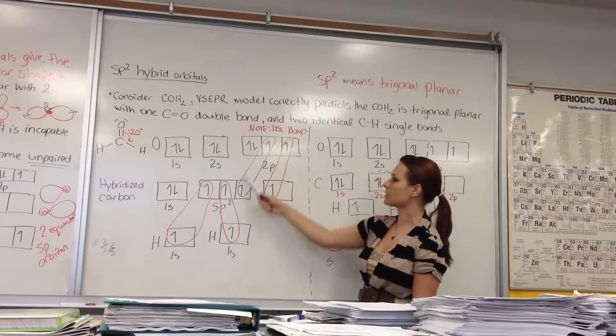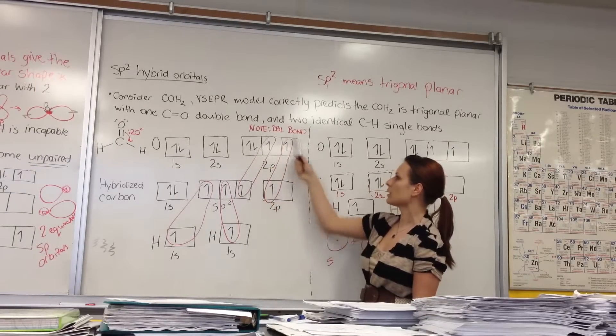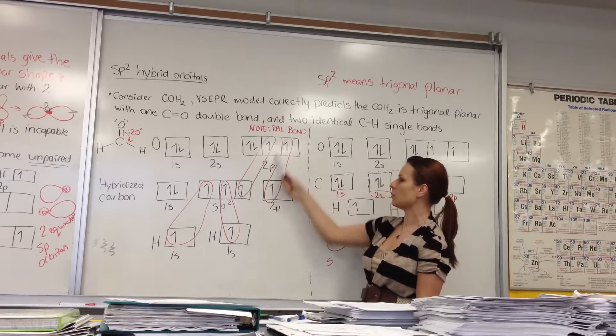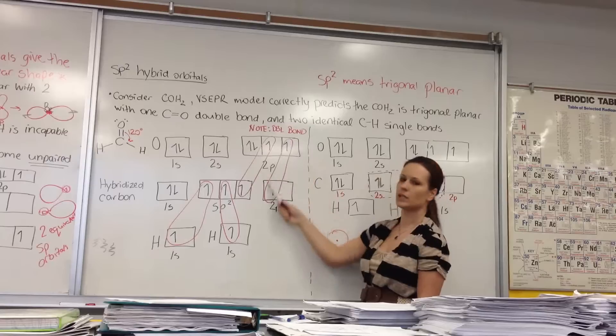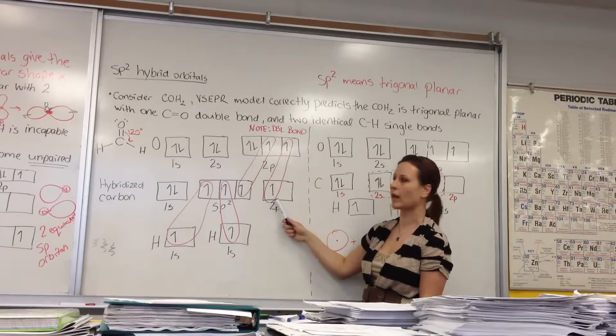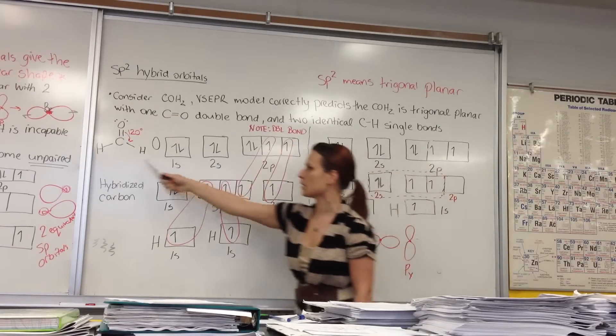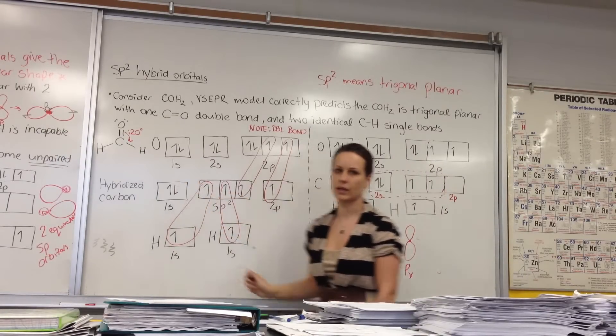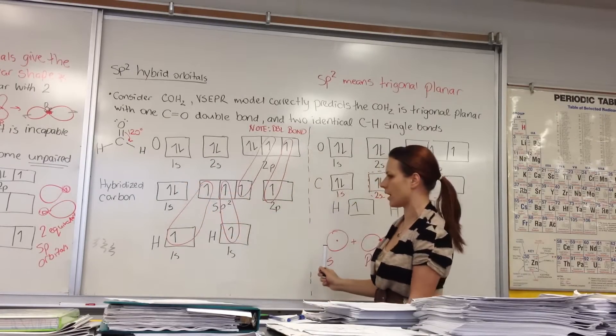The 2P orbital that was left unhybridized now pairs with another 2P of the oxygen, which gives you the double bond. This gives one sigma bond, and the 2P pi overlap gives you the pi bond that you end up getting in formaldehyde.